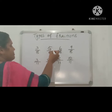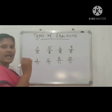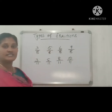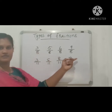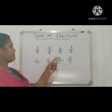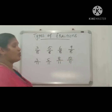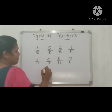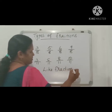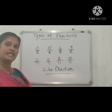Here, 3 by 8, 5 by 8, 6 by 8, 9 by 8 — all are fractions, but all have the same denominator, which is 8. Similarly, 3 by 11, 5 by 11, 8 by 11, 10 by 11 — here also the denominators are the same. Fractions with the same denominator are called like fractions.